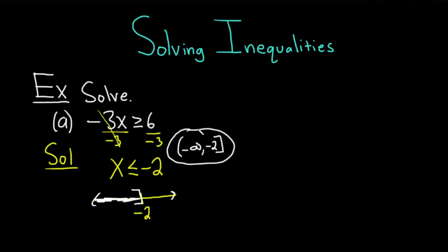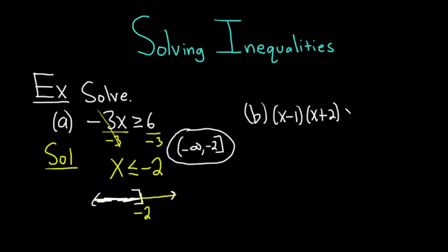That was a pretty simple one. It did involve dividing by a negative number, so remember when you do that you have to reverse the inequality. Let's do one that's a little bit harder. In part B, we have x minus 1 times x plus 2 greater than 0. This is a quadratic inequality, and it's already factored for us.